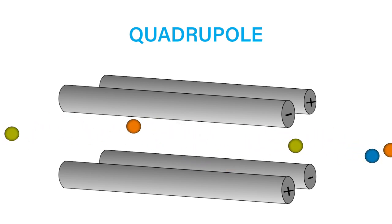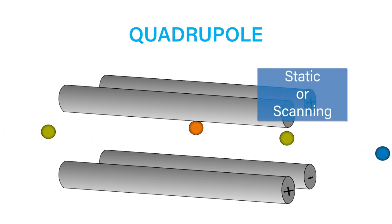Typically, a quadrupole can be operated in one of two ways, static or scanning. All acquisition modes are based on these two modes of operation.